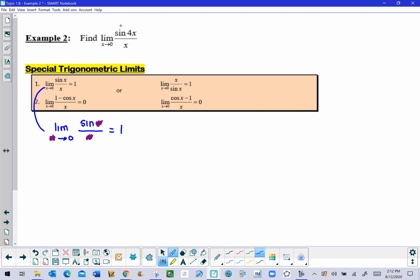So if we revisit our original limit, we can see that we don't have that situation. We don't have these three ideas all being the same thing. But we can make that happen.